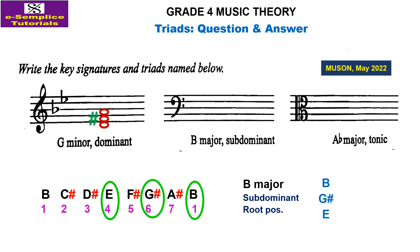Let's write the key signature of B major: F sharp first, followed by C sharp, G sharp, D sharp, and A sharp. Now we can write our triad — E first. You can choose the lower E position, but I use this E position, followed by G sharp, followed by B.